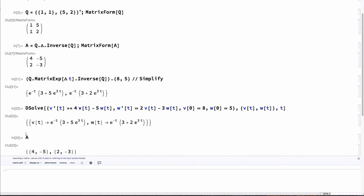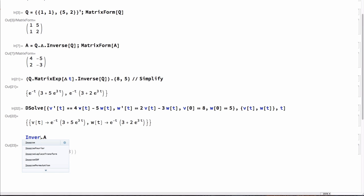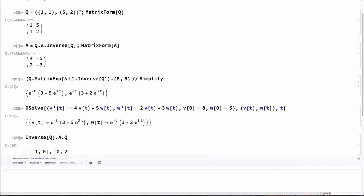So if I take, there's A. So if I multiply Q inverse dot A dot Q, I get back a diagonal matrix with the eigenvalues on the diagonal. So it works.